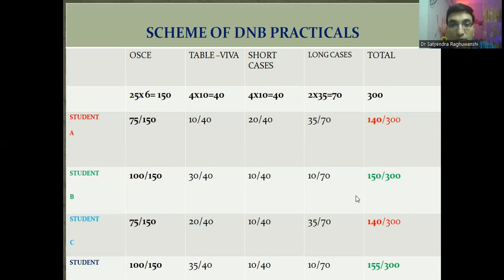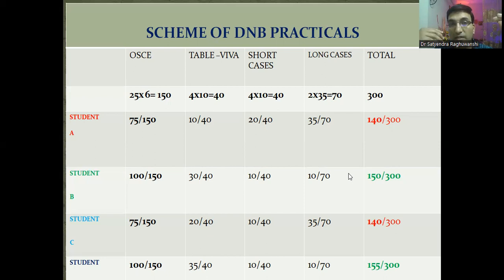Emphasizing the value of OSCE and table viva: DNB and RGHS practicals are not very difficult, but you should know exactly how to score marks. You should emphasize more on spotters, OSCE, and table viva. And in long cases and short cases, you should know how to describe what to describe and have some pertinent differentials in your mind.